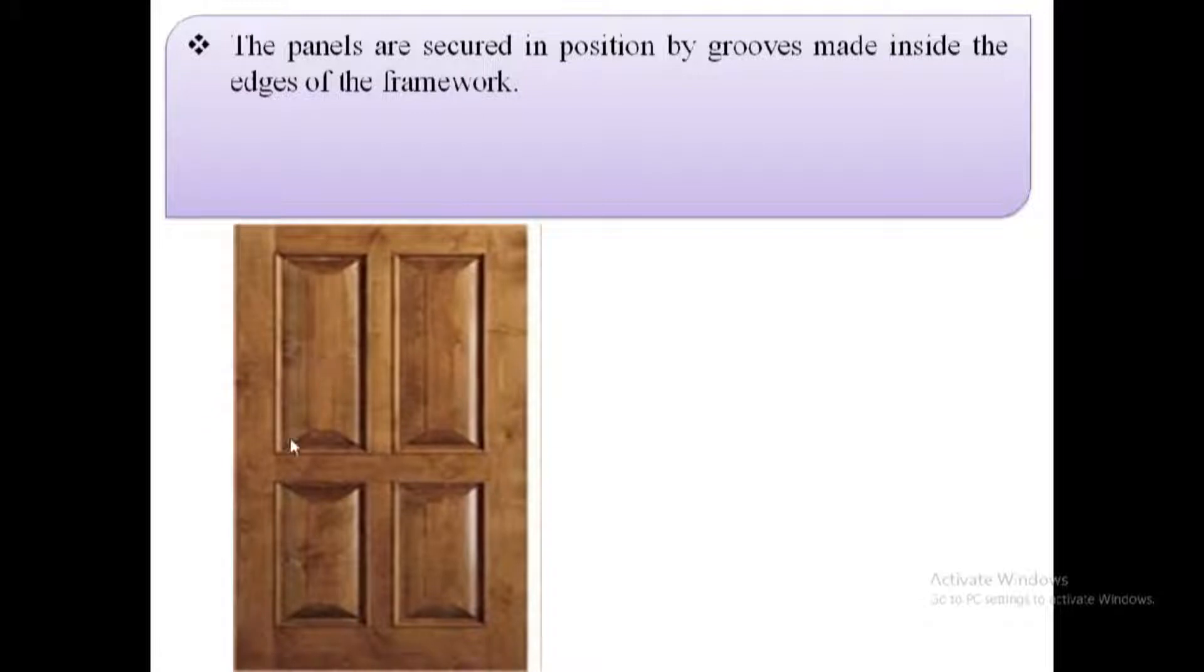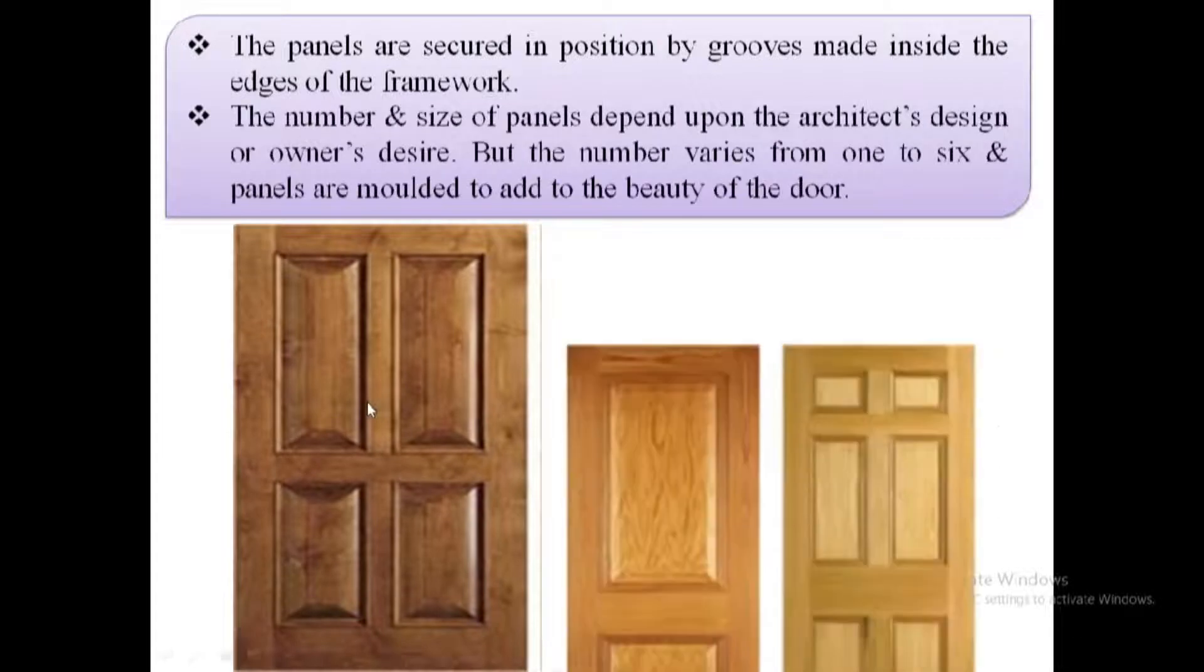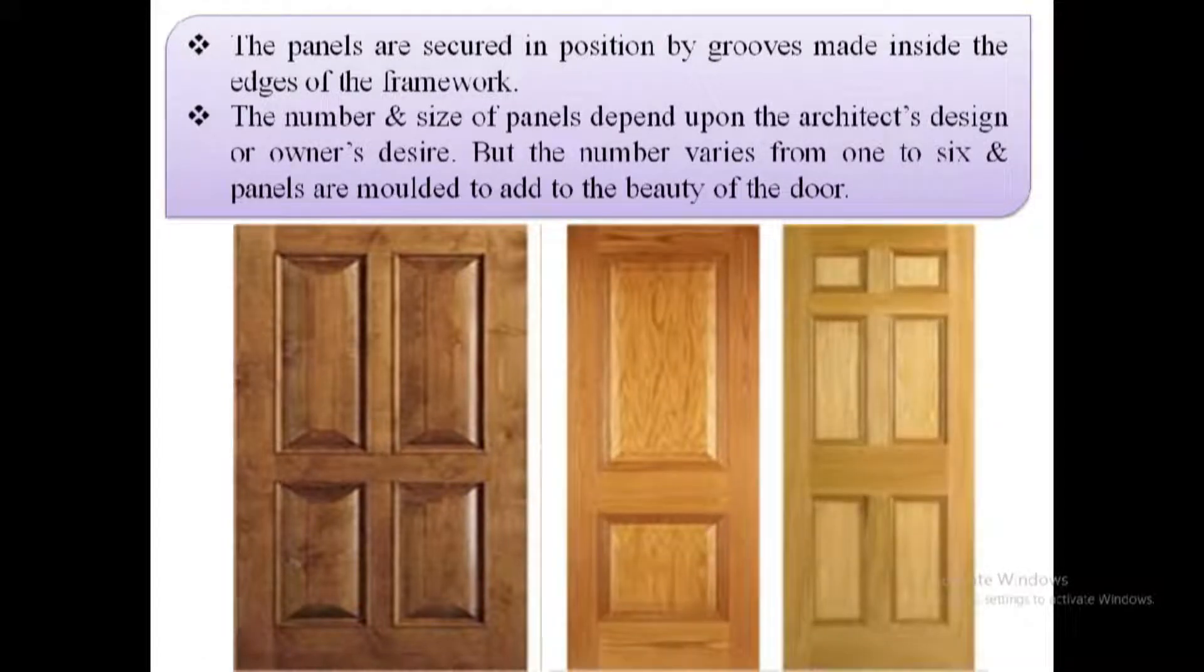These types of doors have the following features and characteristics. The styles are continuous from top to the bottom. They are in single piece. Various rails are joined to the styles at both ends. Top rails, bottom rails are connected to the styles.